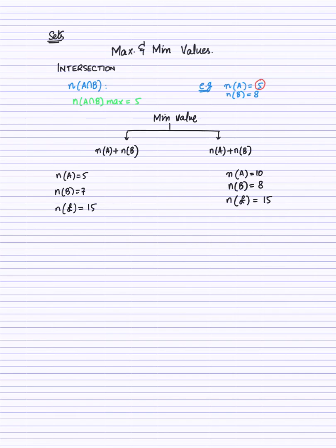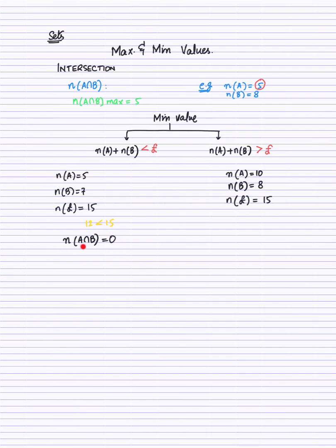We have two scenarios depending on whether N(A)+N(B) is less than or greater than the universal set. In Case 1, adding N(A)+N(B) gives 12, which is less than 15. When N(A)+N(B) is less than the universal set, the minimum value of A∩B equals zero.